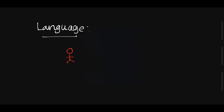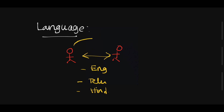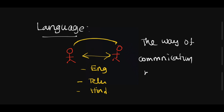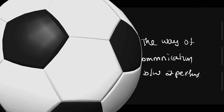What is language? Language means there are two persons communicating with each other. They can speak English, Telugu, Hindi, and so on. Language means the way of communication between two persons — some data is exchanged between two persons. That is the basic definition of language.